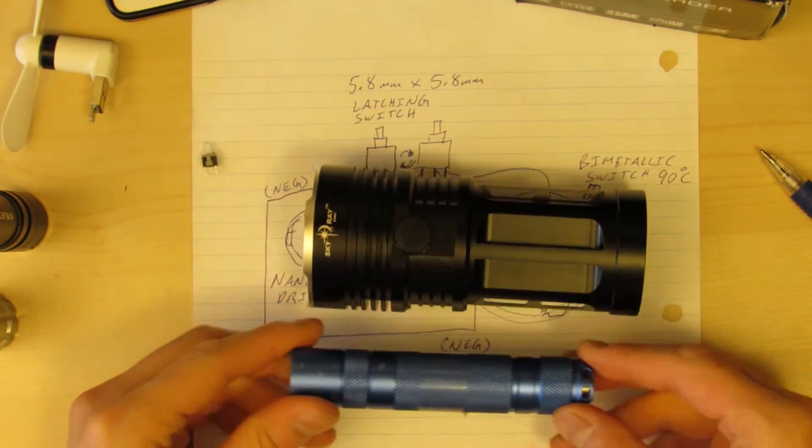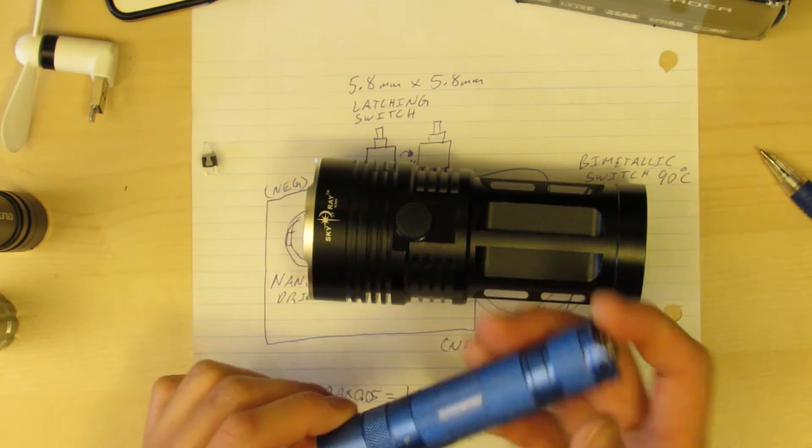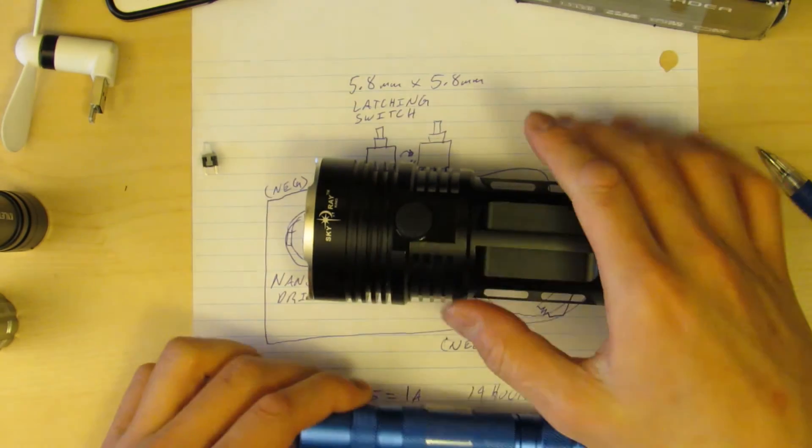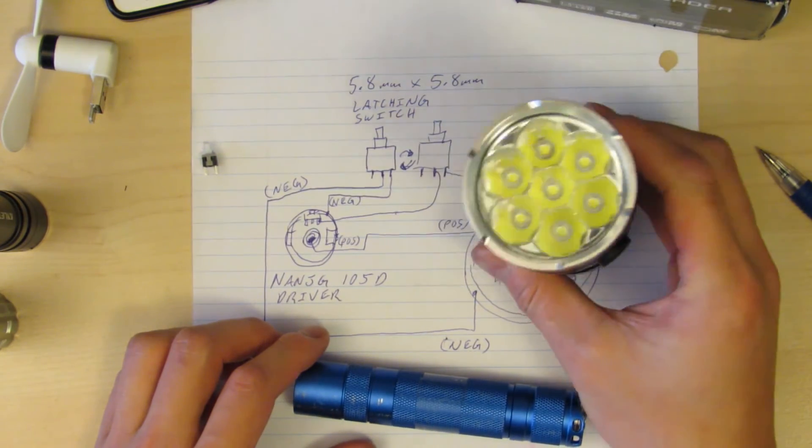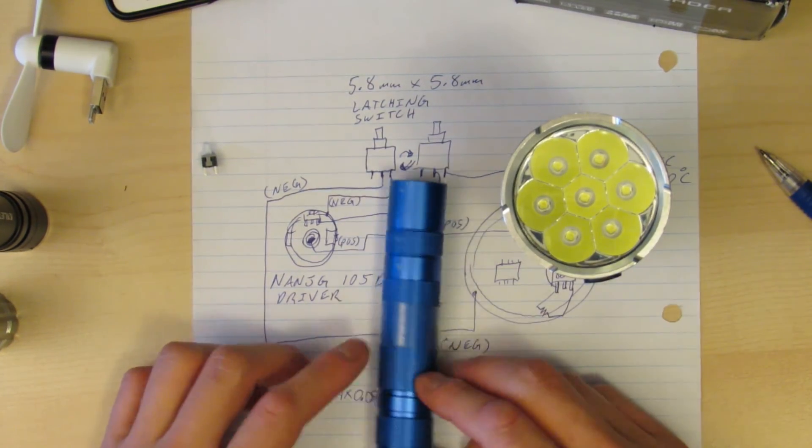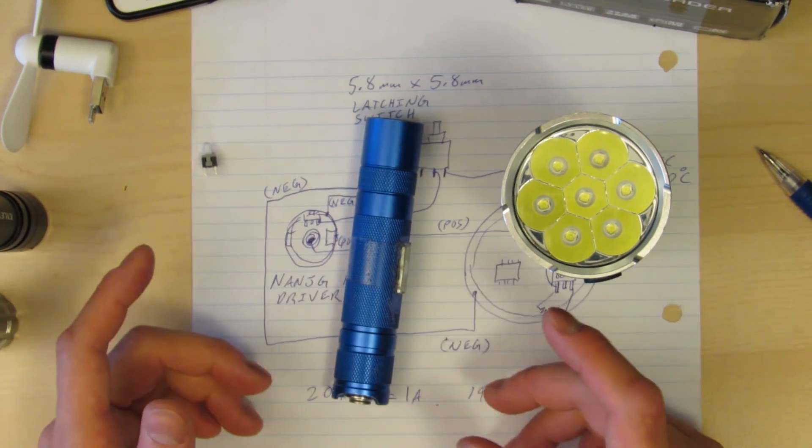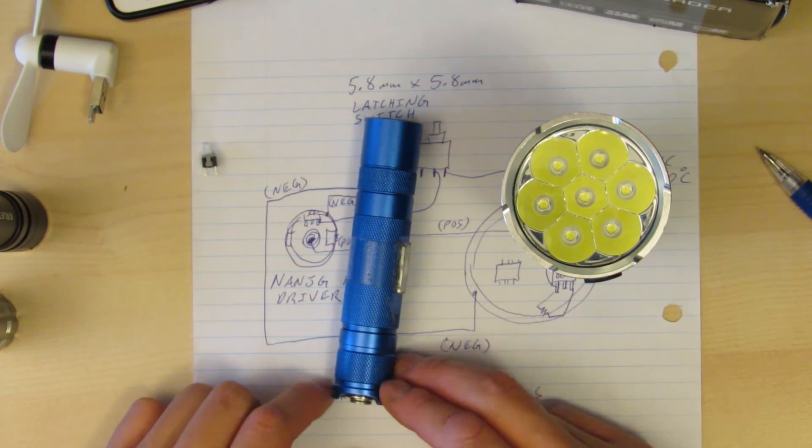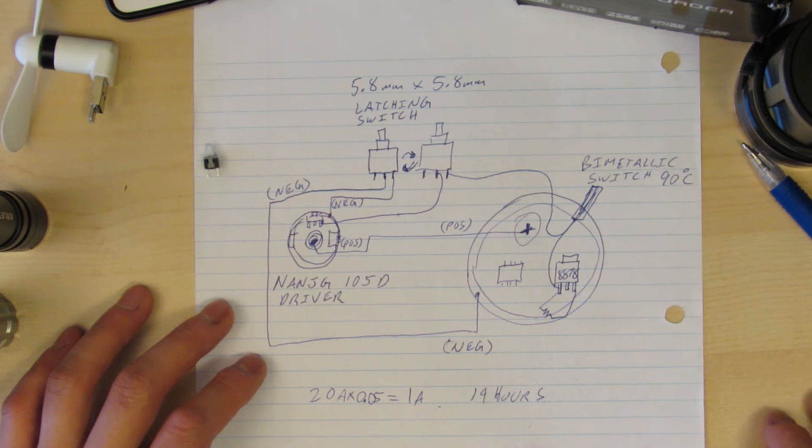Now this thing works as well as the Convoy S2 Plus. It's got a clicky switch and you can get to any mode you want. Get to low all the time, get to high all the time, and access strobe and SOS if you're in an emergency and you need that. Thanks for watching, and I hope that helps.